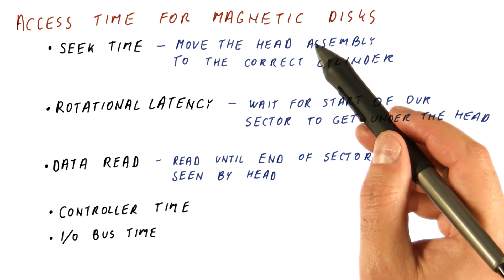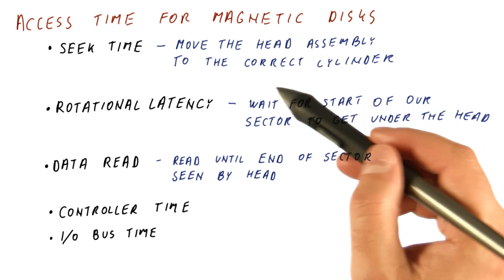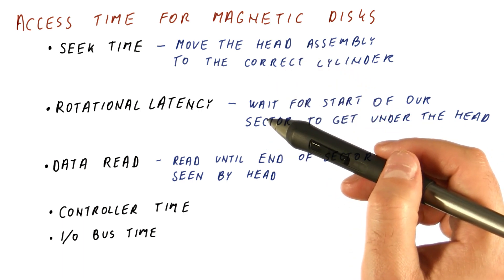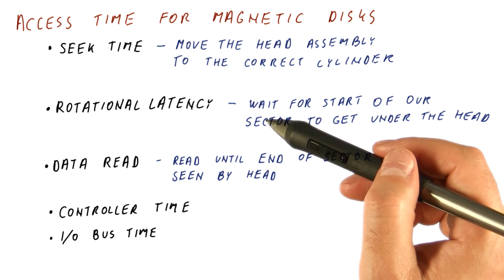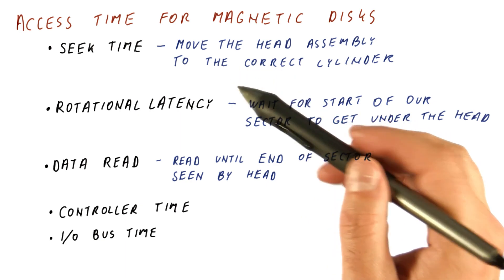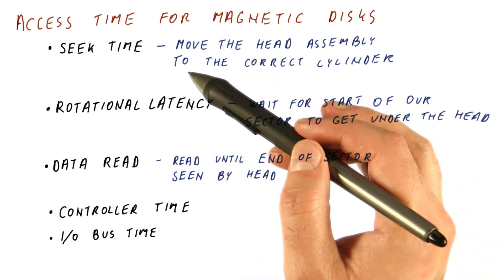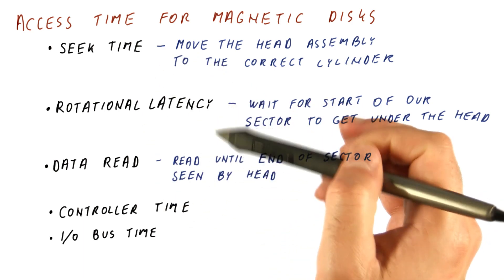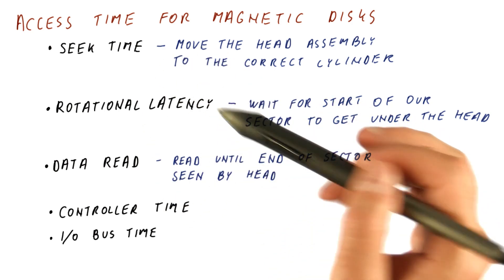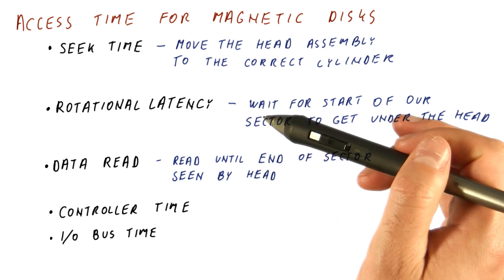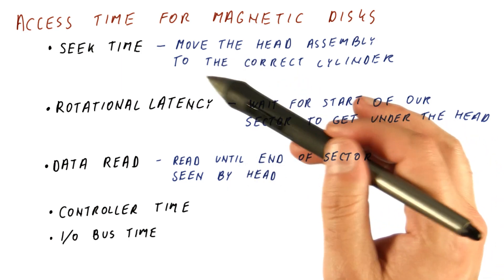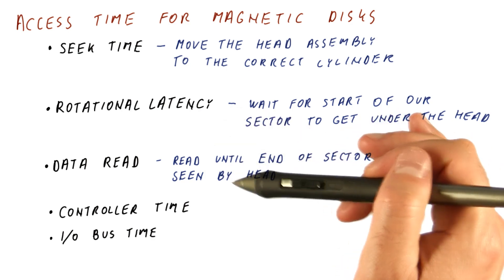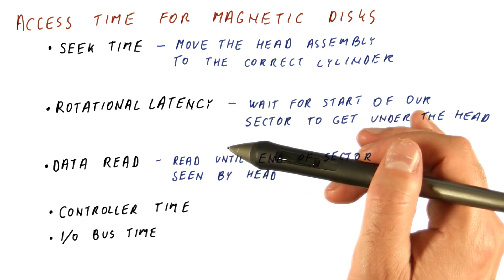Note that unlike a cache or DRAM, where we could potentially be doing multiple accesses at the same time, on a magnetic disk, once we seek to one track, we cannot be reading other tracks. Accesses to the disk happen one at a time — we go to a track, possibly read several sectors, but we cannot access another track until we are done with this one and move to the next.